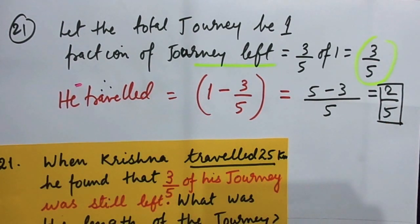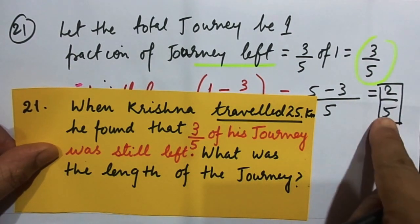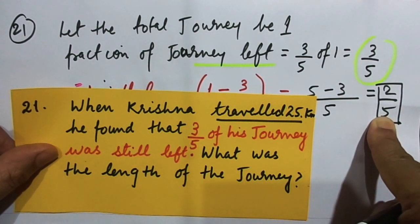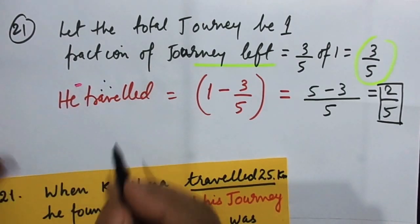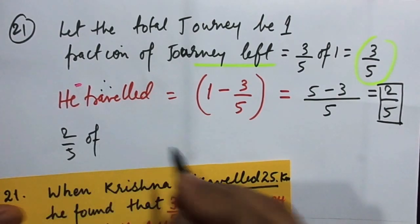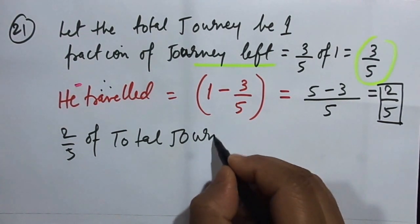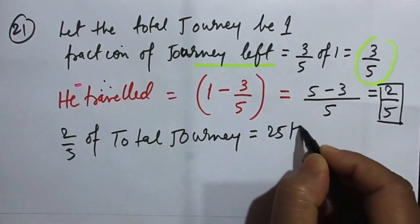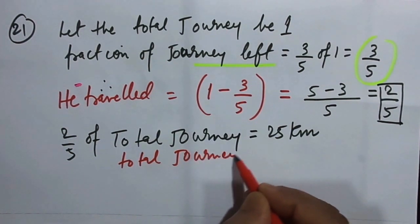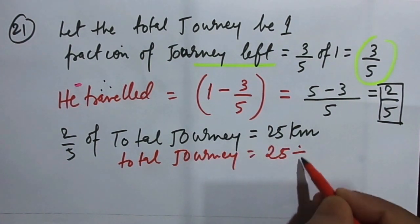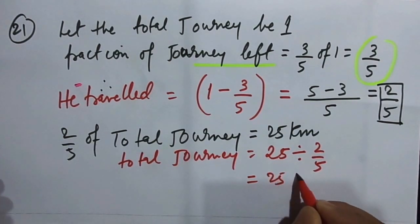So 2 by 5 is the journey he traveled. This fellow had traveled 25 kilometers, which means 2 by 5 of the total journey is equal to 25 kilometers. At the end I'll write: 2 by 5 of the total journey is equal to 25 kilometers. Therefore the total journey will be equal to 25 kilometers divided by 2 by 5.